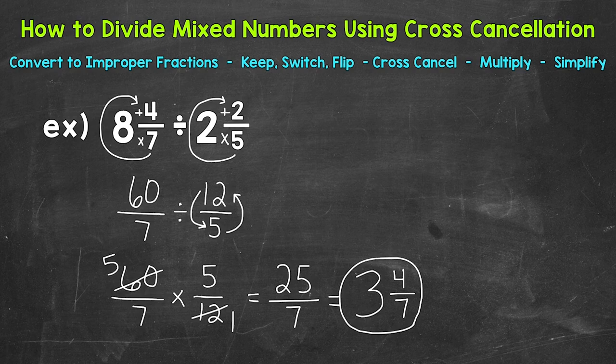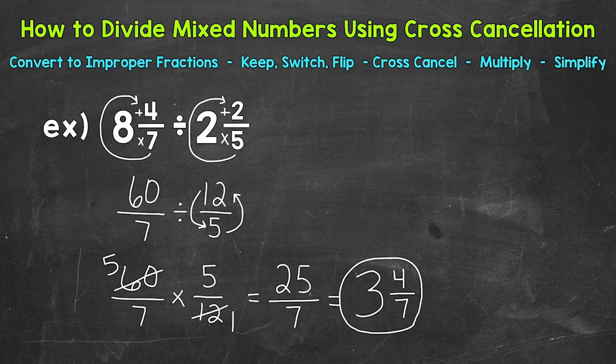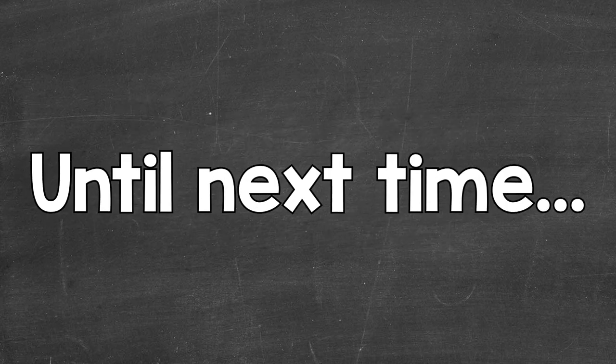Now do we have to use cross cancellation? No. We can multiply straight across and do 60 times 5 and 7 times 12, then go from there. But cross cancellation again gave us smaller and easier numbers to work with — it's a useful tool for multiplication problems involving fractions. Cross cancellation can't be used with every problem; we have to have common factors other than 1 between our numerators and denominators. If the only common factor is 1, then cross cancellation cannot be used. So there you have it — that's how to use cross cancellation when multiplying and dividing mixed numbers. I hope that helped. Thanks so much for watching. Until next time, peace.